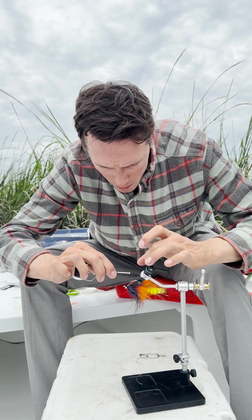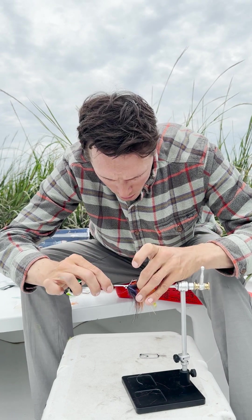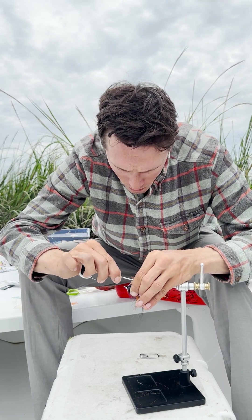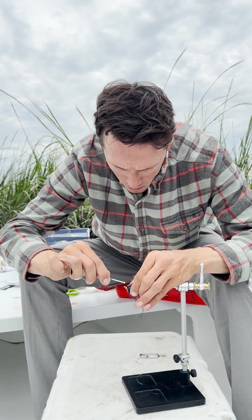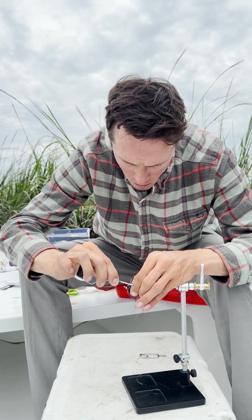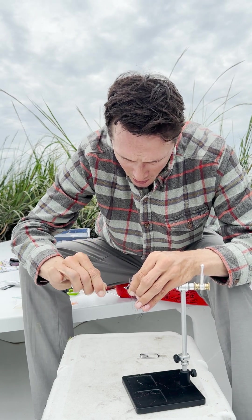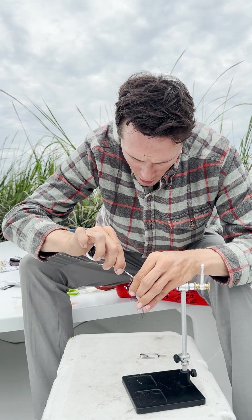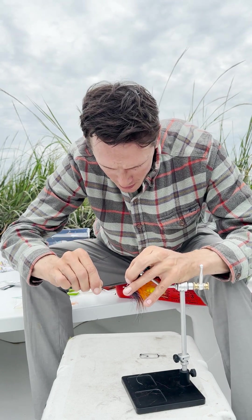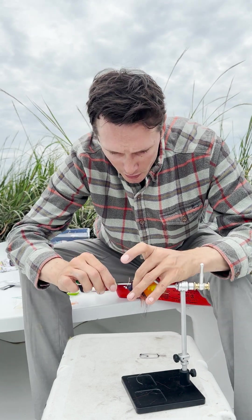Trying not to trap any fibers as well while you're doing this, that's kind of the tricky part. I'm just doing X wraps and then coming behind one stalk at a time, kind of building a thread dam behind each stalk to just make it stick up. Once you get it locked in there, that's looking pretty good right there.